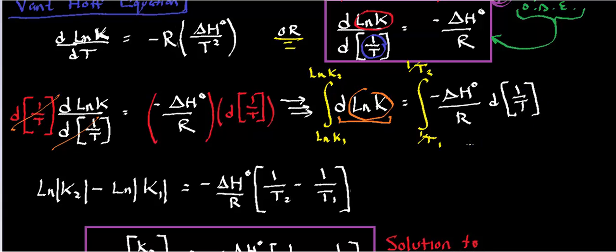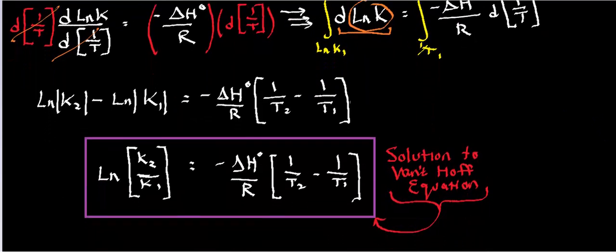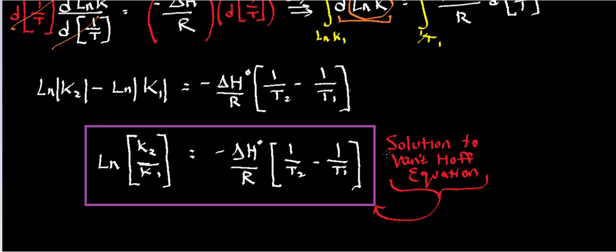So when I do this, this is just fundamental theorem of calculus. I'm going to get ln of k2 minus ln of k1. This is equal to negative delta H standard over R, and I'm going to evaluate this. This is going to be 1 over t2 minus 1 over t1. So this equation, or I should say this solution to the Van't-Hoff equation, is quantifying the variation of temperature with the equilibrium constant and vice versa.